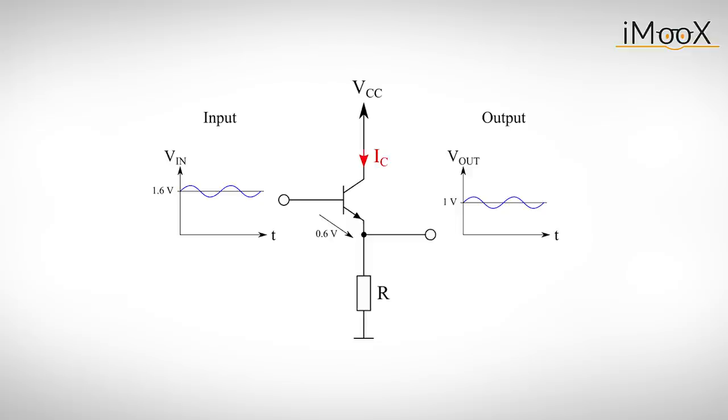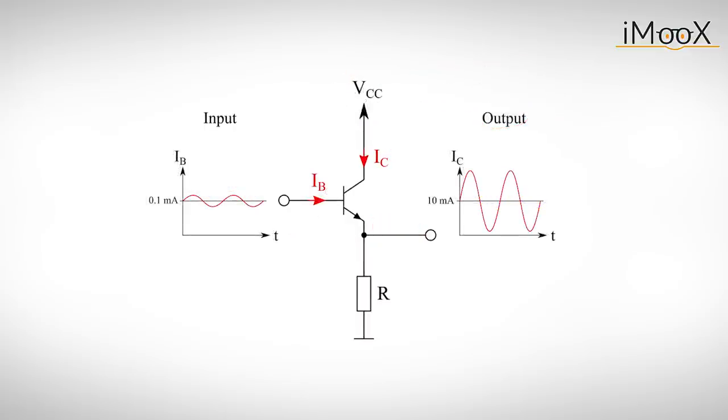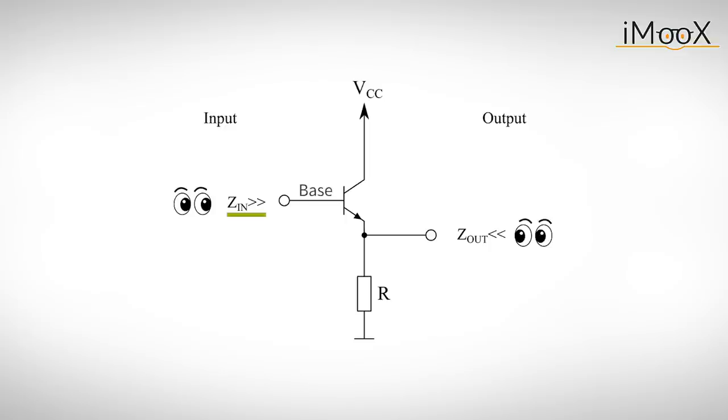At first glance that doesn't seem like an impressive circuit, until you realize two things. One, the output current IC is basically independent of our supply voltage, as long as we remember to obey our two rules. And two, a small change of the input voltage implies a small change of the input current, which causes a big change of the output current. One could also say that the input impedance looking into the base is much larger than the output impedance looking into the emitter.